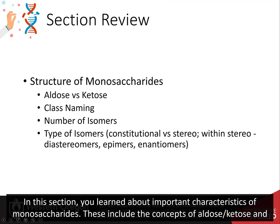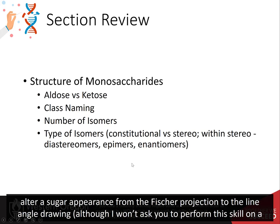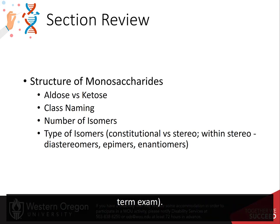In this section, you learned about important characteristics of monosaccharides, including the concepts of aldoses versus ketoses, class naming, finding the number of isomers a sugar should have, and determining the type of isomers present. You also learned how to alter a sugar's appearance from the Fischer projection to the line angle drawing, although this skill will not be assessed on a term exam.